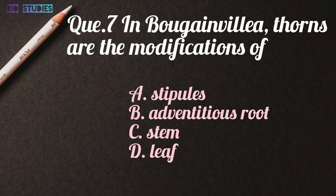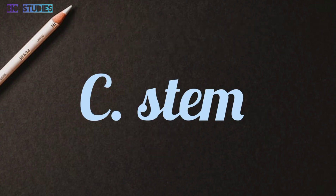Seventh question: In Bougainvillea, thorns are modifications of — stipules, adventitious root, stem, or leaf. Answer is C: stem.